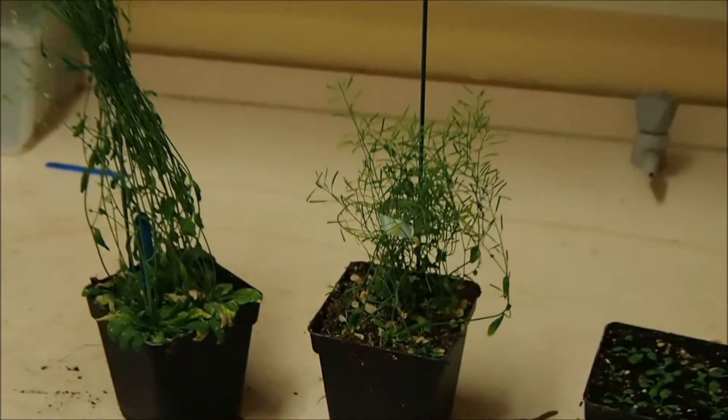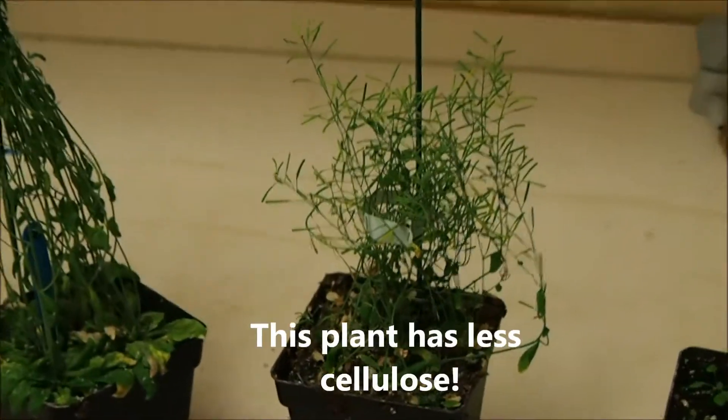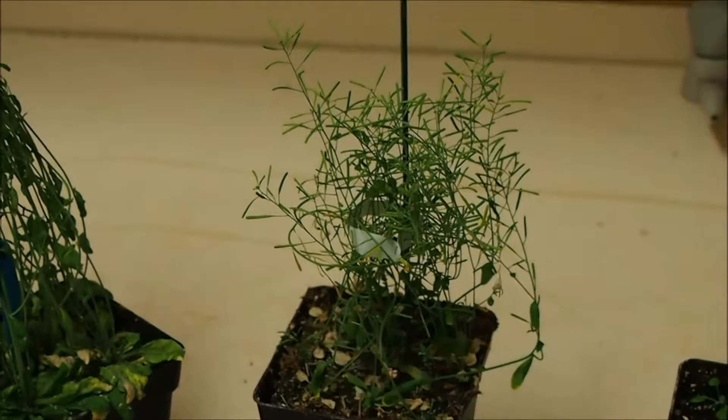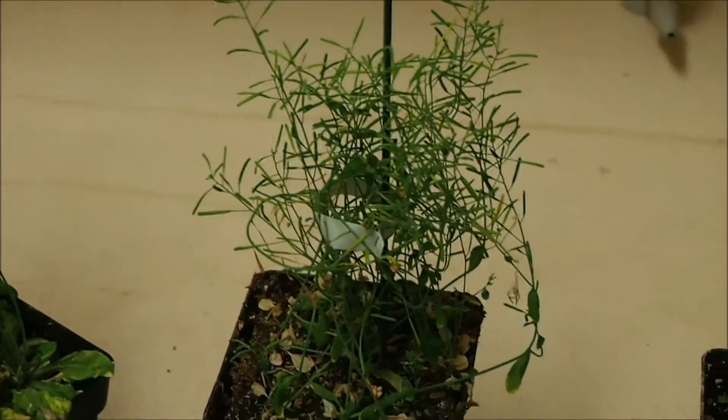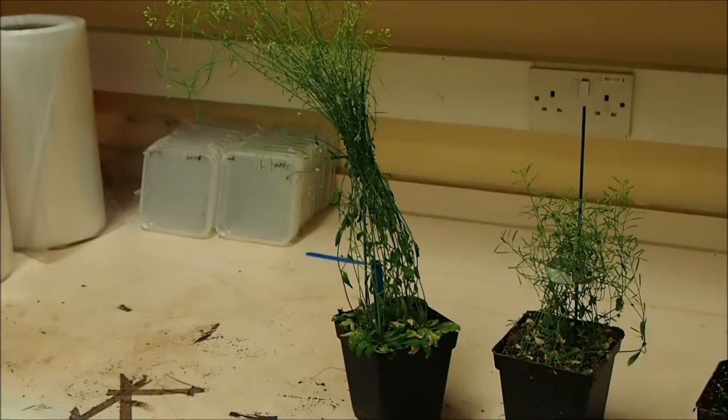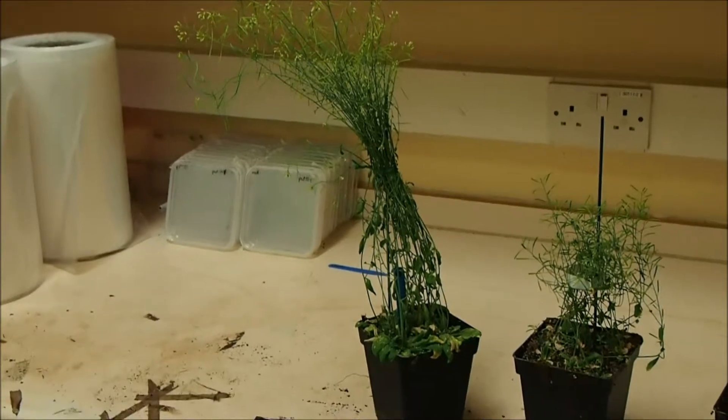So as you can see on the right is a cellulose-deficient mutant. It's severely stunted in its growth. It's looking a bit weak and unhealthy compared to the wild type on the left. This is because it lacks cellulose-making components.